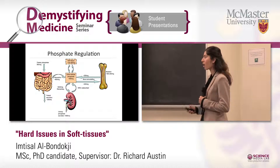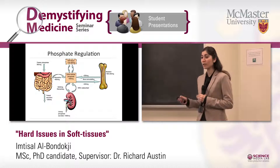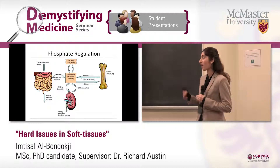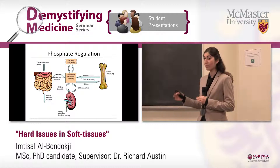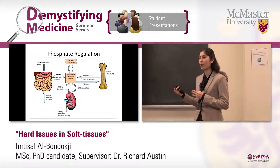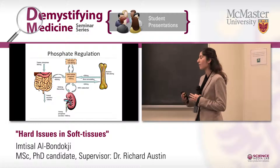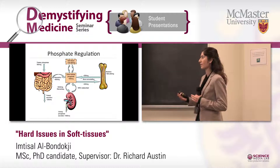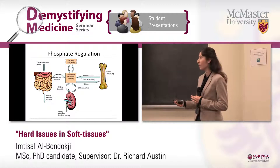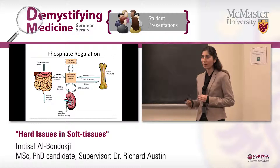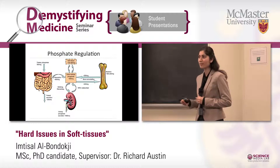In kidney failure patients, a common occurrence is that when your kidneys are failing, they are unable to excrete toxins or excess ions such as phosphate through the urine. So it accumulates within the body, and because the skeleton has already taken enough of the phosphate ion, the body tries to compensate by depositing this phosphate in soft tissues — and one of the soft tissues in our bodies is the arteries.